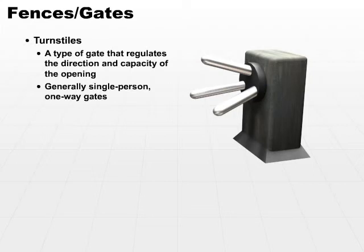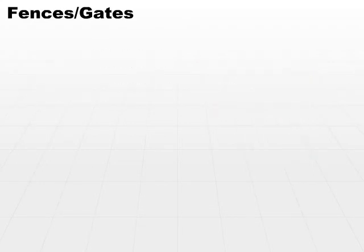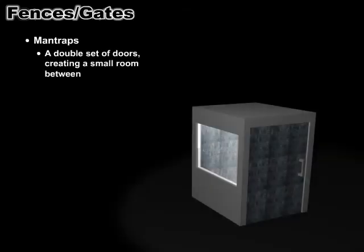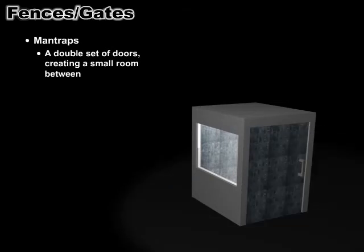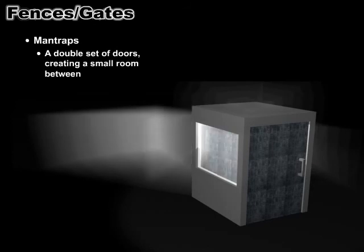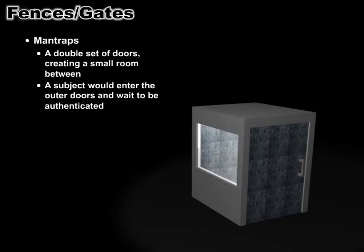In some ways similar to a turnstile, in that it controls the flow, is called a man trap. A man trap is a double set of doors, which creates a small gap or a small room in between. The idea is that a man trap is set up so that you cannot hold both doors open at the same time. You have to enter the room and let go of one door in order to reach the other door. A subject would enter the outer doors, and in a secure man trap, would have to stay in the center to be validated or authenticated.